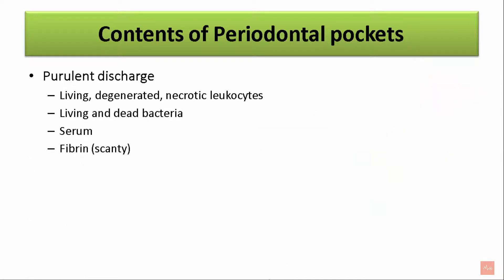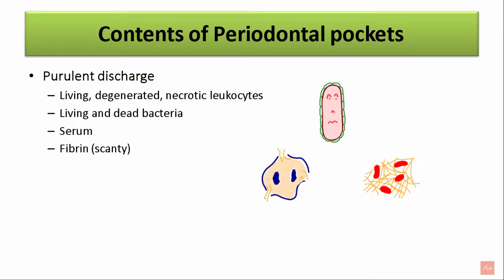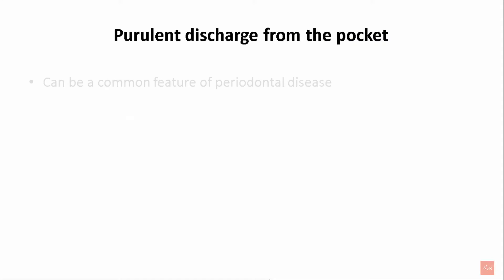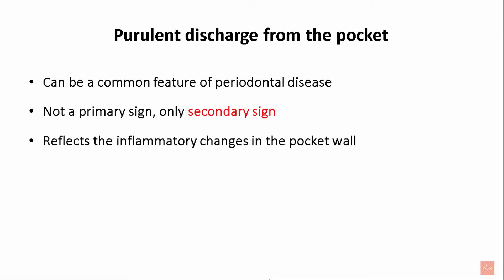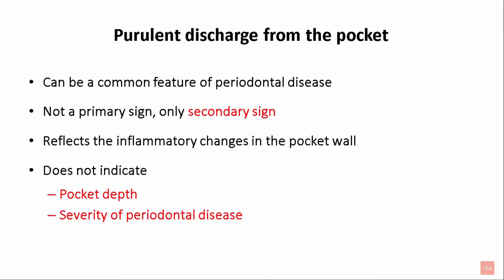Purulent discharge can be seen from the periodontal pockets. It is associated with living, degenerated, or necrotic leukocytes, living and dead bacteria, serum, and fibrin in scanty amounts. The significance of purulent discharge from the pocket is that it can be a common feature of periodontal disease. However, it is not a primary sign—it is only a secondary sign. It reflects the inflammatory changes in the pocket wall, but it does not indicate pocket depth or severity of the periodontal disease.